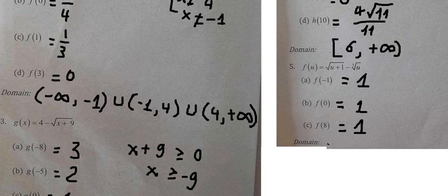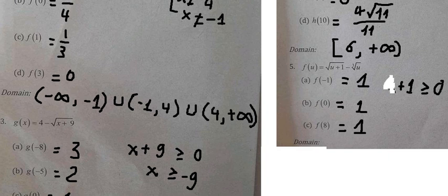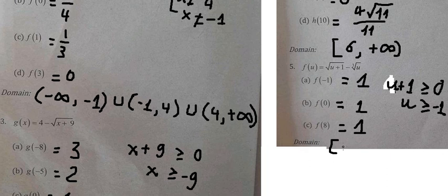For the domain, s plus one must be greater than or equal to zero — this is the square root condition. The other part involves a cubic root, so it is defined for all values of u. We only need the square root condition, which requires positive values. We put one in here and now we have the final answer.